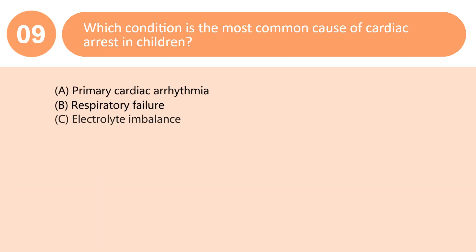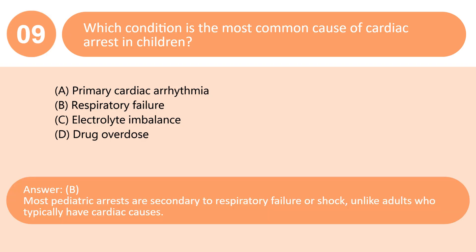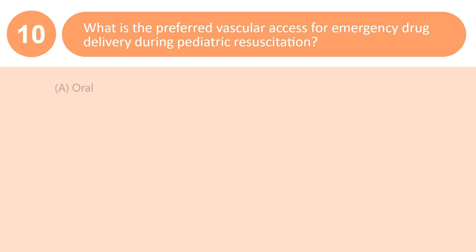Which condition is the most common cause of cardiac arrest in children? A. Primary cardiac arrhythmia. B. Respiratory failure. C. Electrolyte imbalance. D. Drug overdose. Answer: B. Most pediatric arrests are secondary to respiratory failure or shock, unlike adults who typically have cardiac causes.